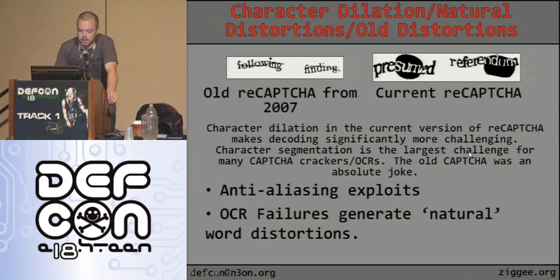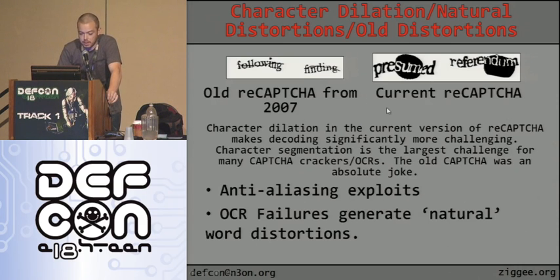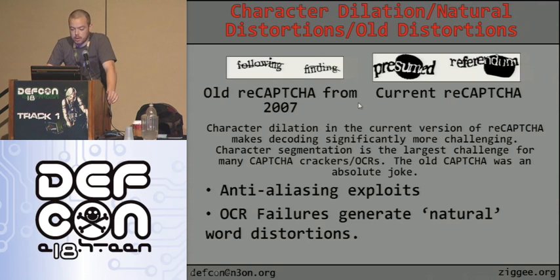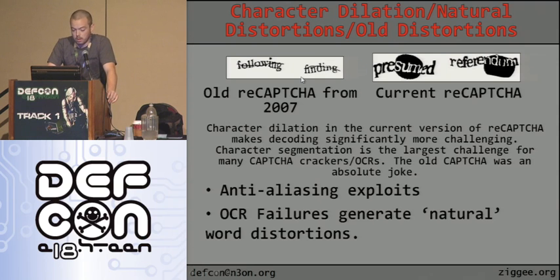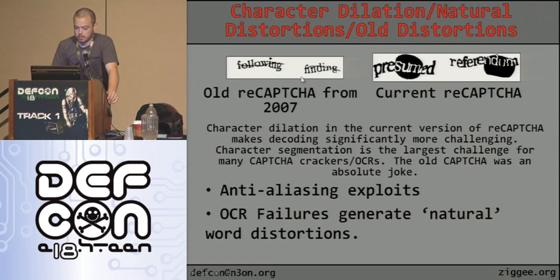This is the old reCAPTCHA from 2007. While it isn't technically the current one — they changed it about a week before — I'll keep calling it current. Character dilation in the current reCAPTCHA makes decoding significantly more challenging because character segmentation is the largest challenge for CAPTCHA crackers and OCRs. The old CAPTCHA was straightforward, with anti-aliasing exploits making it easy to segment characters. You could identify the darkest pixels and almost completely remove the interfering line that way. OCR failures also generate natural word distortions in the CAPTCHA.